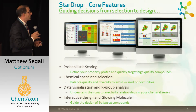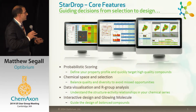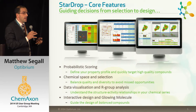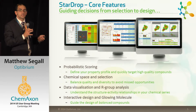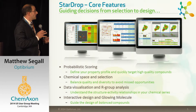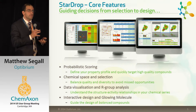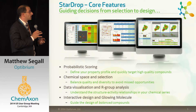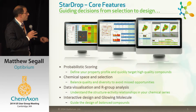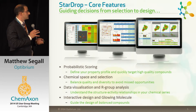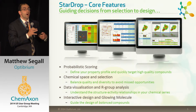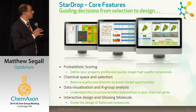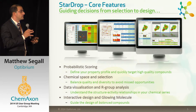StarDrop provides a number of core features that enable that. Our probabilistic scoring is our approach to that multi-parameter optimization problem — a rigorous way that allows you to define the property profile that you require, assess all the data that you have, taking into account uncertainty, so that you can target those high quality compounds with the highest chance of success. We also look at chemical space and selection to balance quality and diversity and avoid missing opportunities, making sure we're exploring that chemistry appropriately. It's all embedded in a very interactive data visualization environment with group analysis, helping you understand structure-activity relationships and guide further optimization. And then there's the glowing molecule — using information in predictive models to highlight regions on compounds that are having the strongest influence on properties, to guide the design of compounds with improved properties.